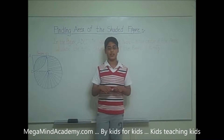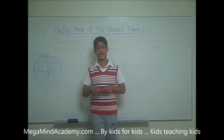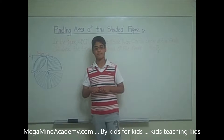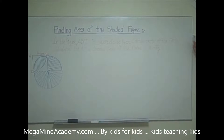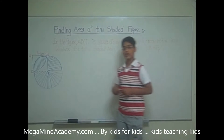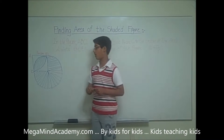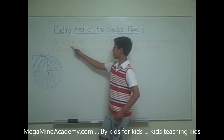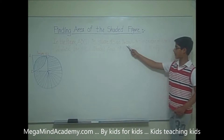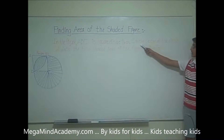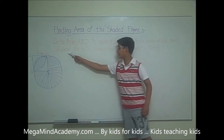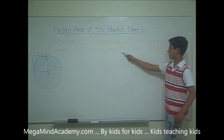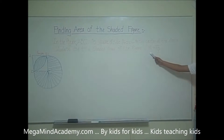Hi! Today we're going to learn about how to find the area of the shaded figure. Let's say we have a problem to solve. In the figure, ABCD is a square of side 14 centimeters. C is the center of the circle. Calculate the total shaded area of the figure. Pi is equal to 22 over 7.